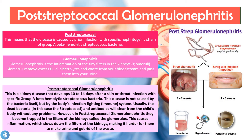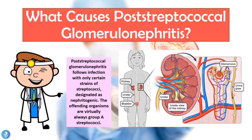Post-streptococcal glomerulonephritis is caused by an initial infection with only certain strains of streptococcus designated as nephritogenic, and the offending organisms are virtually always a group A streptococcal infection.